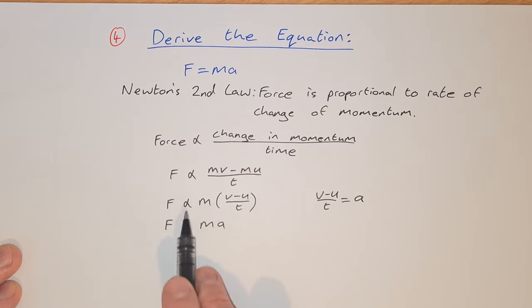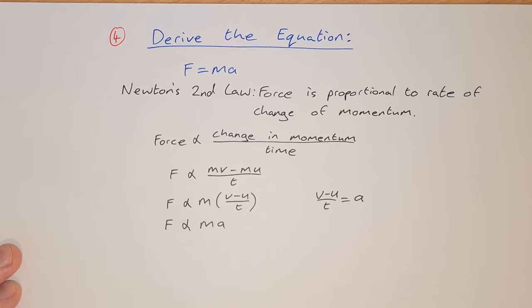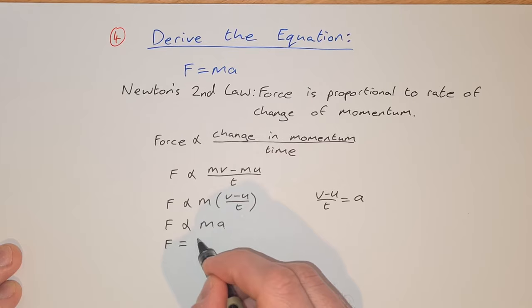If we want to get rid of this proportionality sign and make that an equals sign, we need to bring in our constant of proportionality. So that would be f equals k, which is our constant of proportionality, times ma.